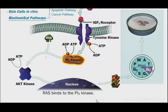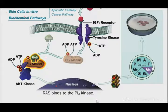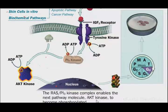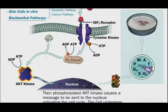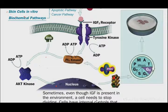They will bind to Ras protein. Ras binds to PI3 kinase, and PI3 kinase is activated. This activates protein kinase B. The next pathway causes protein kinase B to become phosphorylated, and then phosphorylated protein kinase B sends a message to the nucleus that the cell can activate the cell cycle.